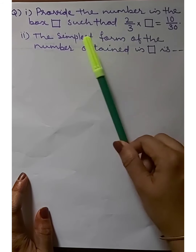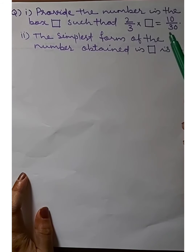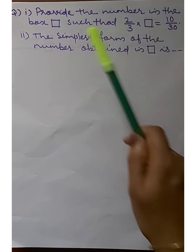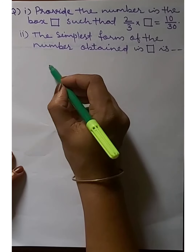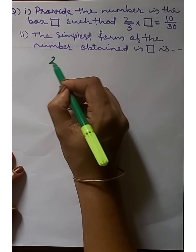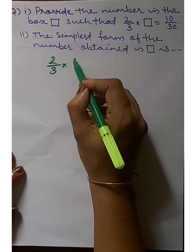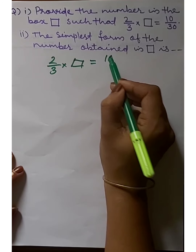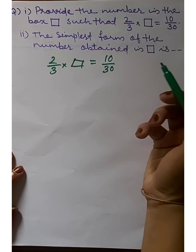Next question: find the number in the box such that 2/3 × □ = 10/30. Second part: find the simplest form of the number obtained in the box. First, we find the number in the box: 2/3 × □ = 10/30.